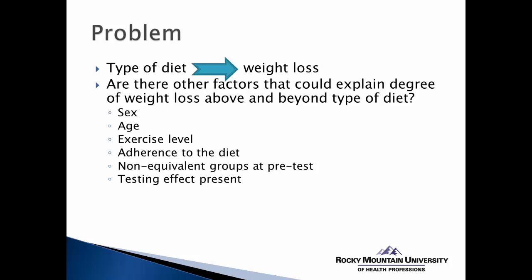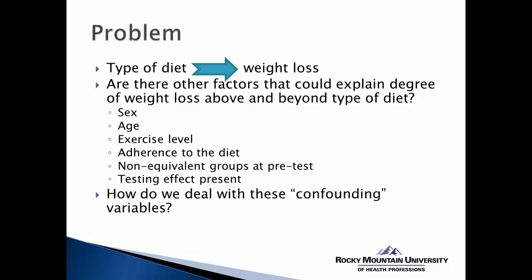These become problematic — they become threats to the internal validity of the study. So how can we deal with these confounding variables? How can we diminish the effect that they're having on our ability to see the cause-and-effect relationship? Well, there are two ways we typically try to deal with these. The first is we try to control them in the design — doing things in the study design that help eliminate or at least control the effect that sex, age, or exercise level may have on the outcome.